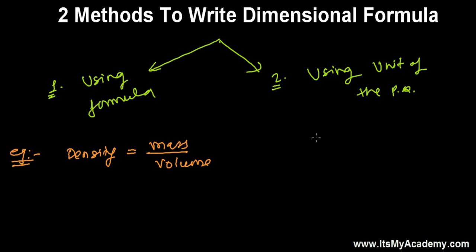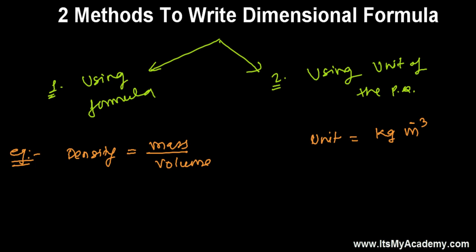And what is the unit of density? Unit of density — that's mass. From here you can easily see: mass means kg, and volume means length times breadth times height, so it's simply meter cube. But since it's in the denominator, it will go up. So it's kg per meter cube. You should know the unit.